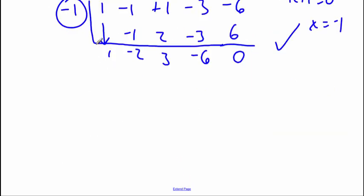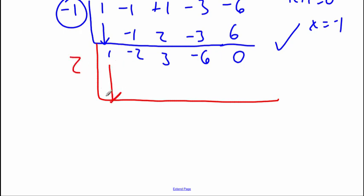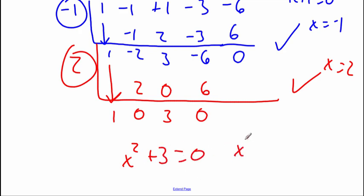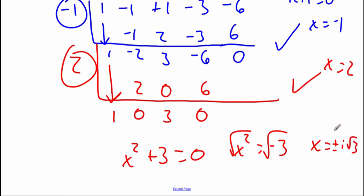Based on this, we set up another round of synthetic division using 2 on the remaining coefficients. Carrying down: 1; 2 times 1 is 2; adding gives 0; 2 times 0 is 0; adding gives 3; 3 times 2 is 6 — zero remainder, so 2 also works. The leftover polynomial is x squared plus 3. Setting that equal to zero gives x squared equals negative 3, so x equals plus or minus i root 3 — complex zeros. The problem asked for real zeros, so our answers are x equals negative 1 and x equals 2.